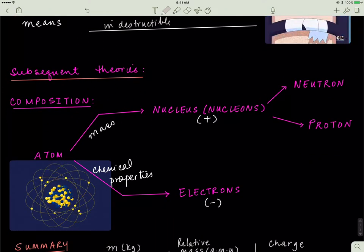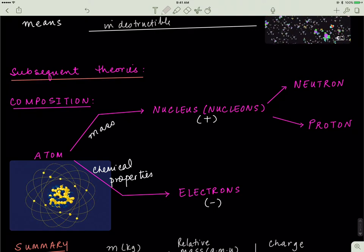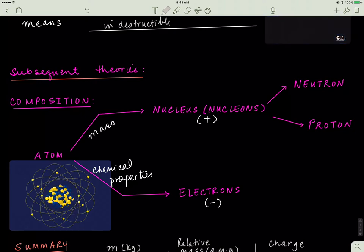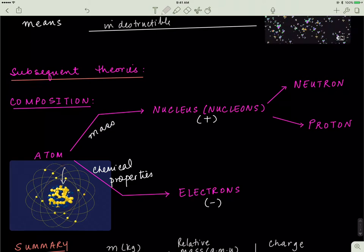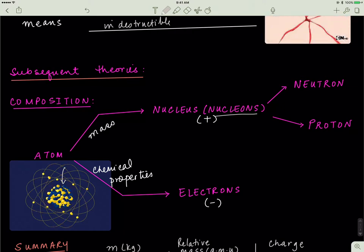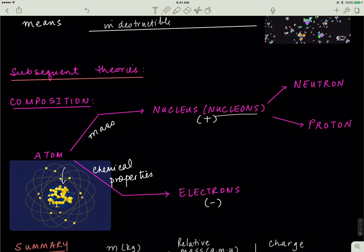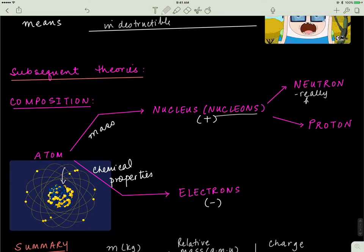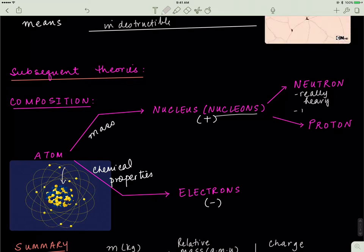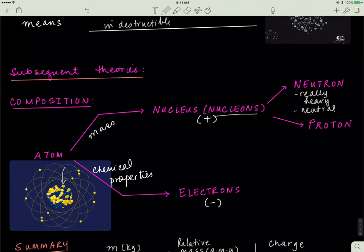So it turns out that the atom is primarily composed of two regions. One is the central heavy part and that central heavy part is called the nucleus or the center of the atom. Every particle that's inside of the nucleus, we call those collectively nucleons. So nucleons are just the residents, the citizens of the nucleus. It turns out that there are two kinds of nucleons in the nucleus. You have the neutrons, which are really heavy particles, extremely heavy. And the other cool thing is they're neutral, so they don't have any charge.